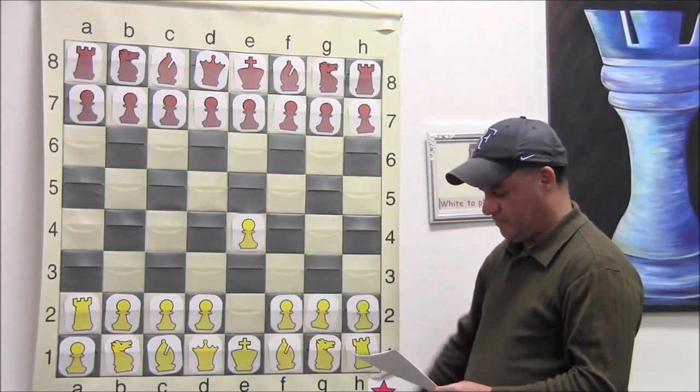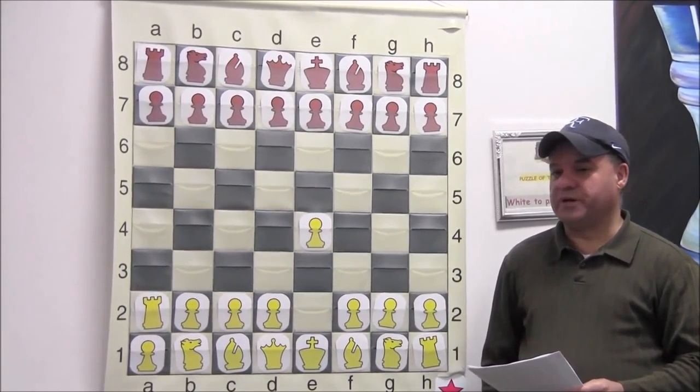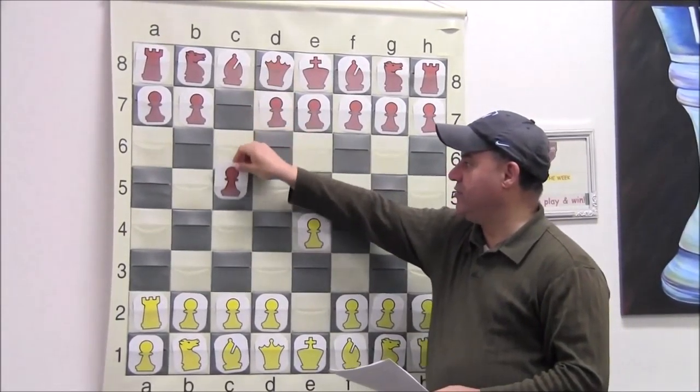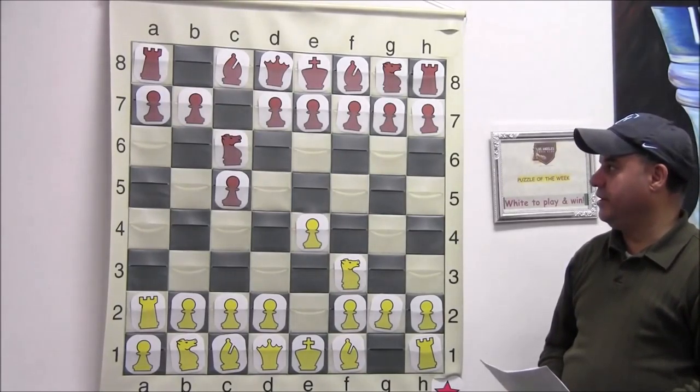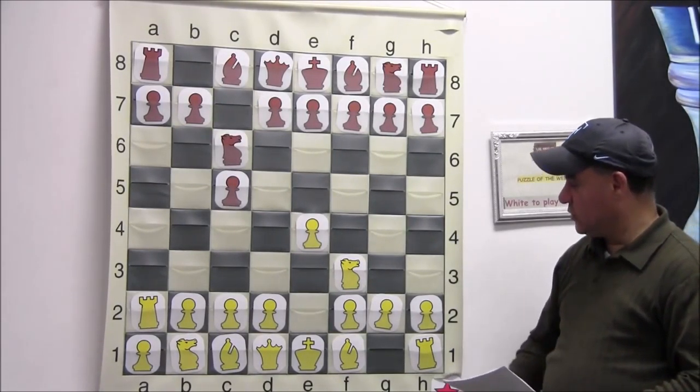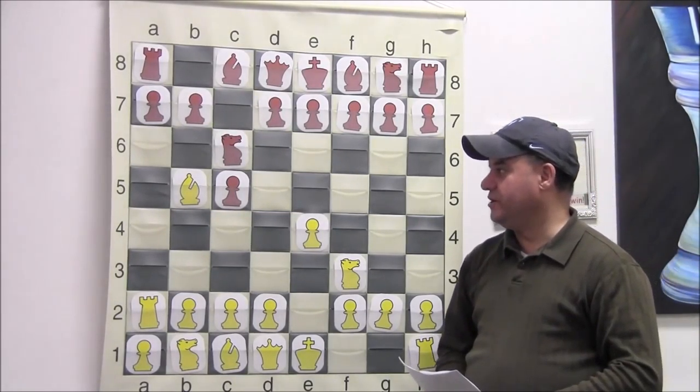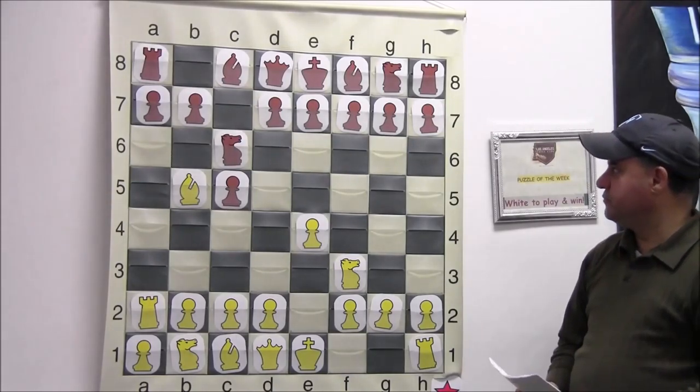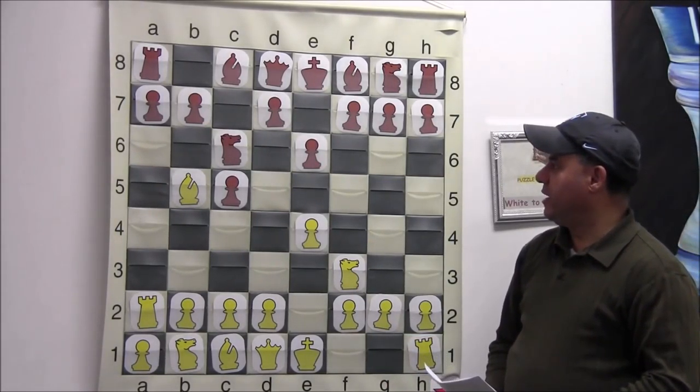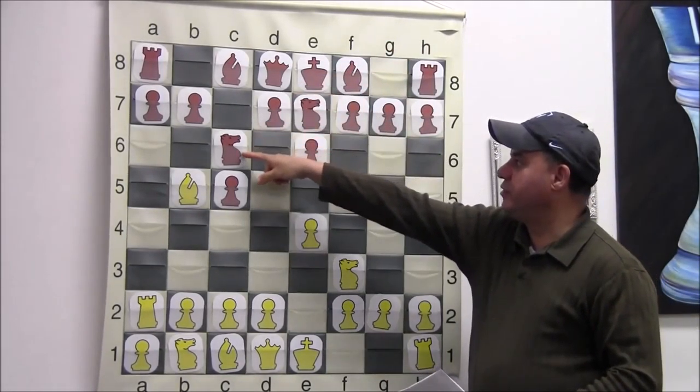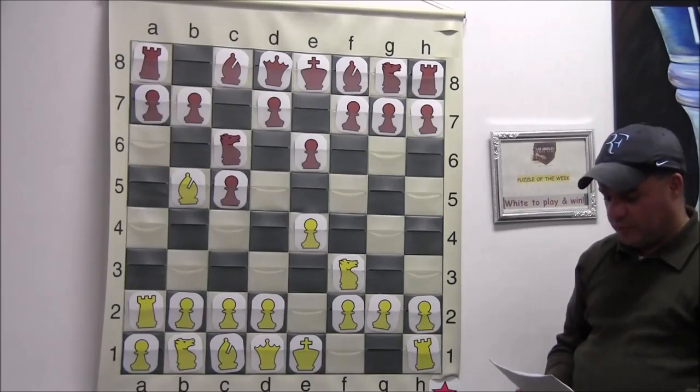He opened with E4. This is the third game that Anand opened with E4 in this match. And obviously, Gelfand, who was one of the best Sicilian-Najdorf players in the world, he quickly responded with C5, continued with knight F3, knight C6. Anand decided not to challenge Gelfand in his main repertoire, which is Sicilian-Najdorf. So three times in this match, he played Bishop-B5 variation, which is mostly one of the anti-Sicilian lines. Rosalimo variation, it's called.